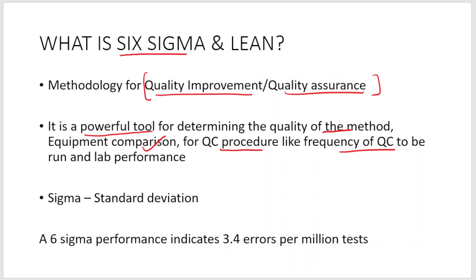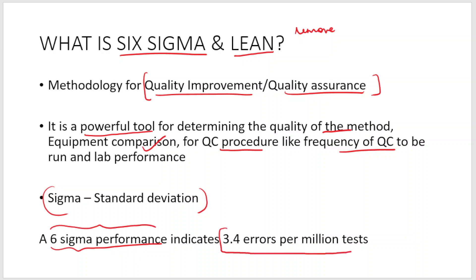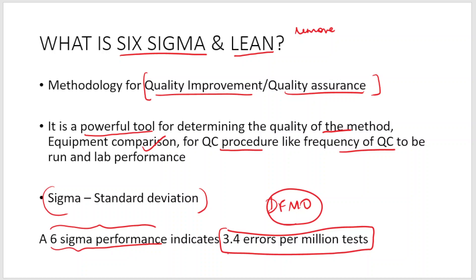Six Sigma mainly aims at quality improvement — enhancing quality assurance in any laboratory setup — whereas lean methodology mainly aims at removing the waste steps in any process of quality improvement. Sigma is nothing but standard deviation. A six sigma performance indicates there are only 3.4 errors per million tests. The performance is always indicated with defects per million opportunities, so a method following six sigma performance has only 3.4 errors per million tests.